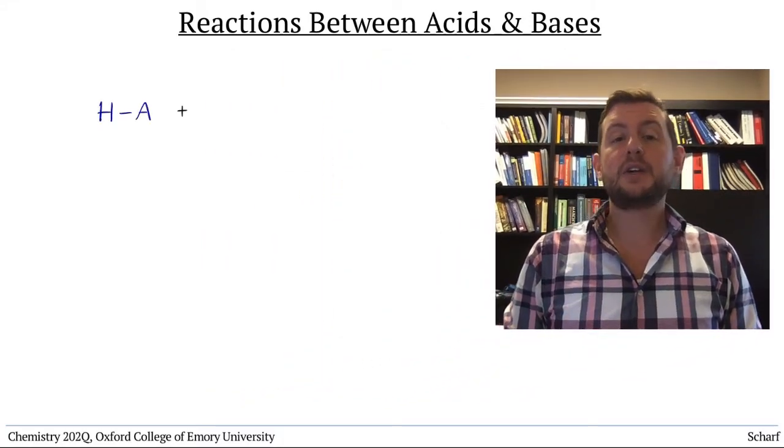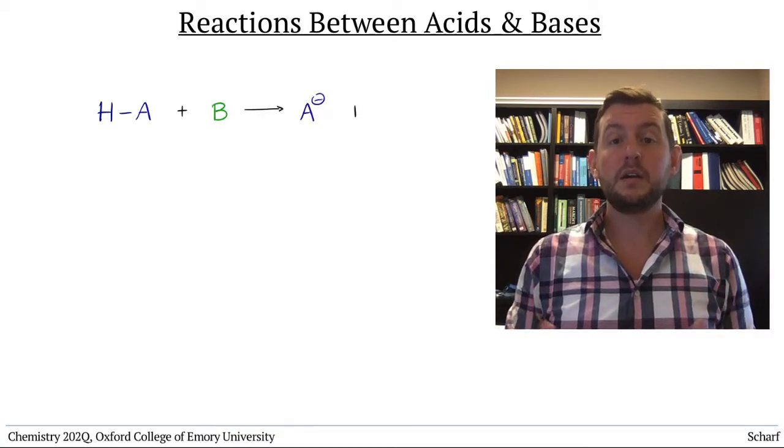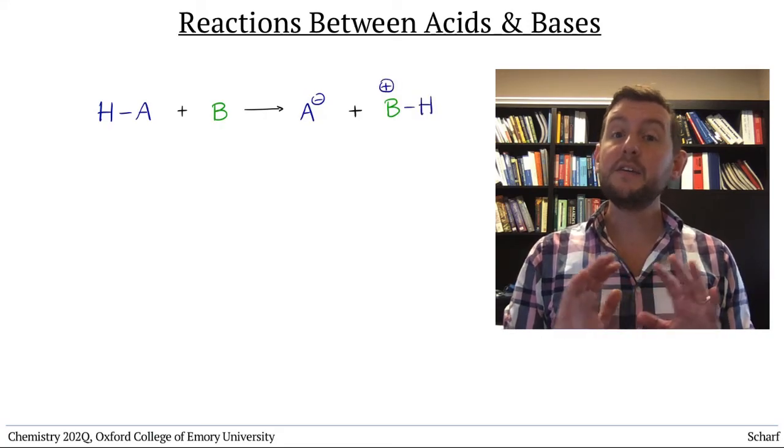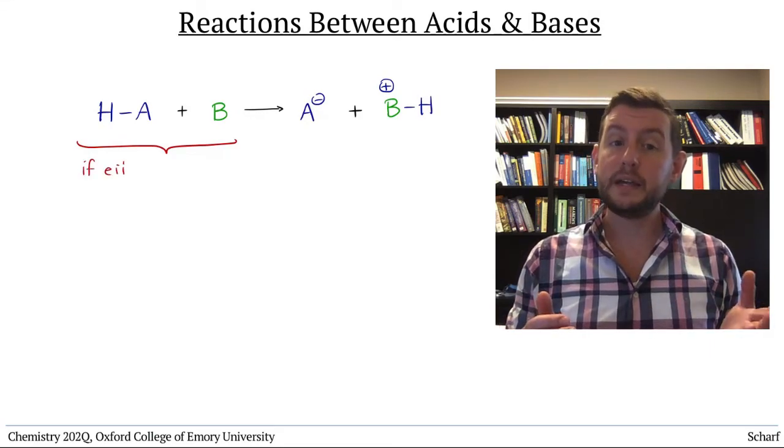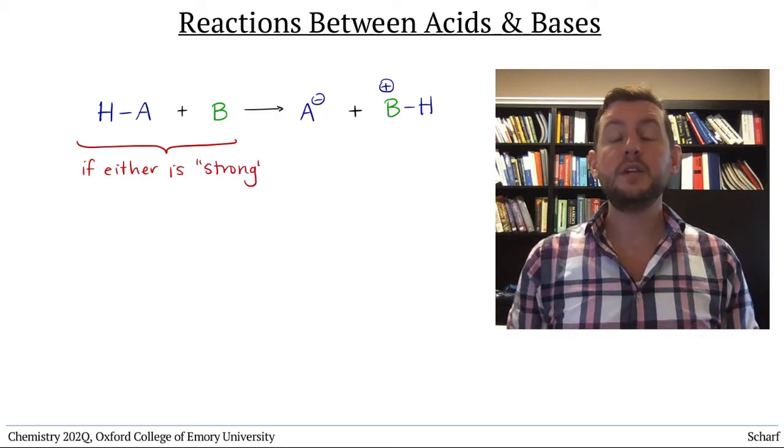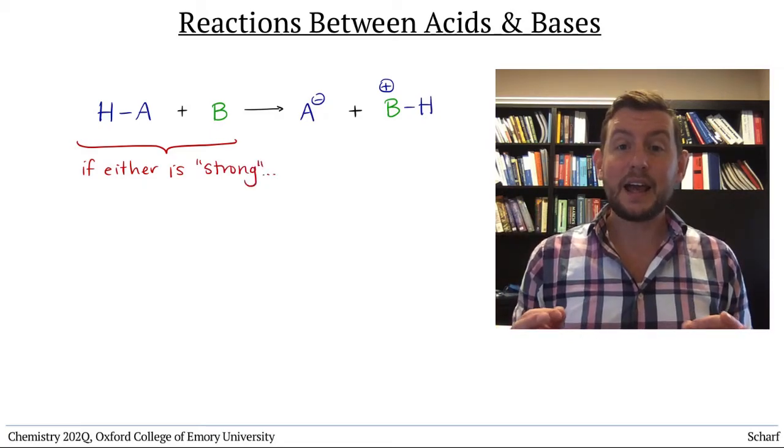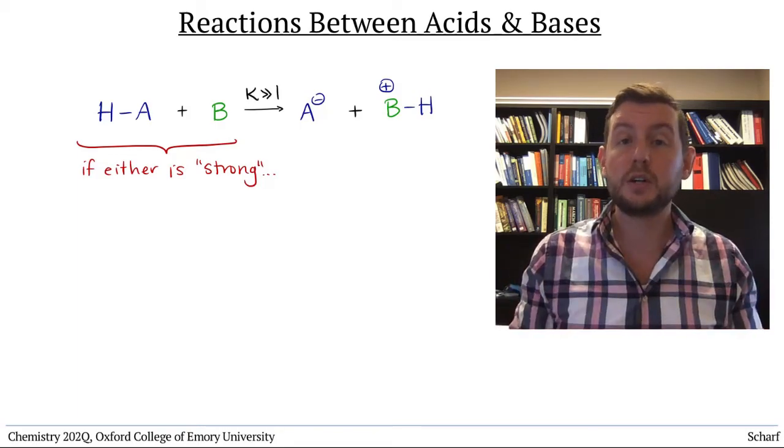The generic reaction in question is HA plus B going to A minus and BH plus. If either the acid HA or the base B is strong, then we treat this reaction as if it's irreversible. That is, as if it has a large equilibrium constant and goes essentially to completion.